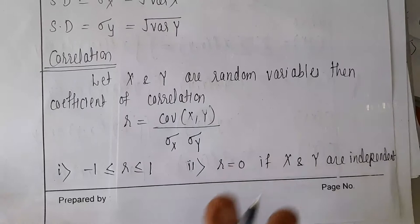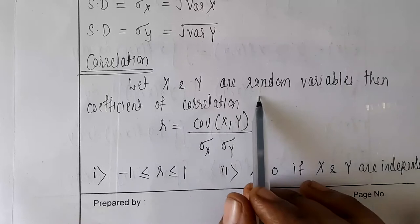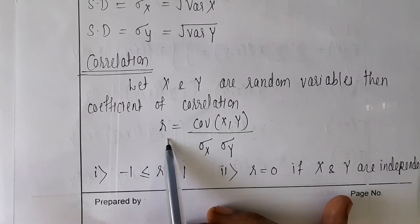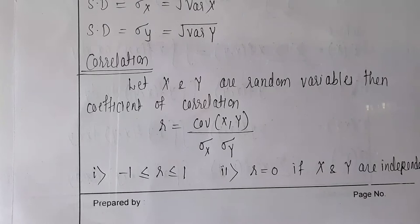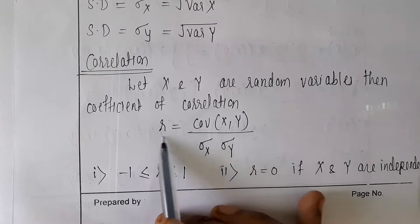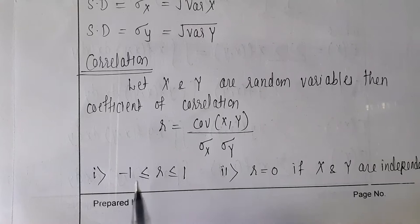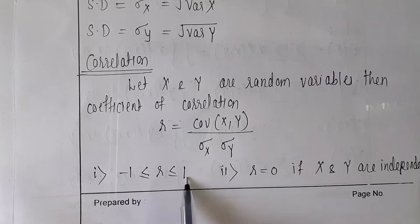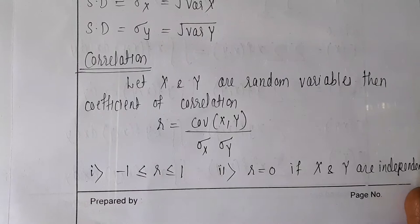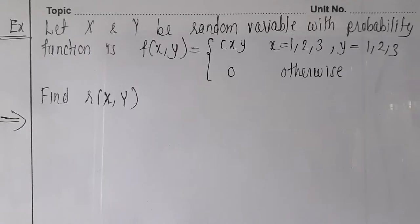The next definition is correlation, which means the relation between two variables. If X and Y are two random variables, the coefficient of correlation is denoted by r and defined as the covariance of X and Y divided by sigma_x times sigma_y. This coefficient of correlation has a maximum value of 1 and a minimum value of -1, so r lies between -1 and 1. If r equals 0, we say X and Y are independent — there is no relation between them.